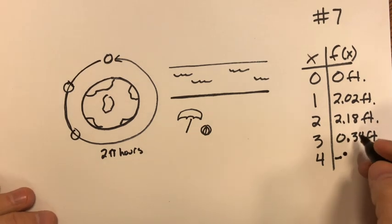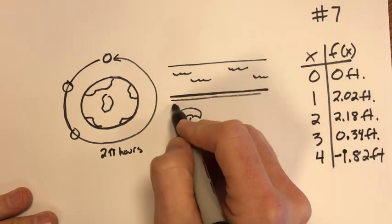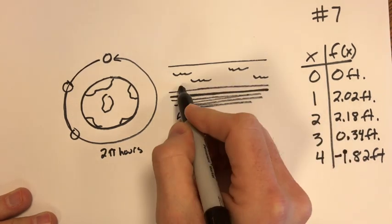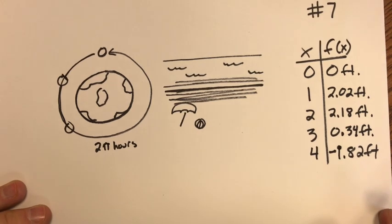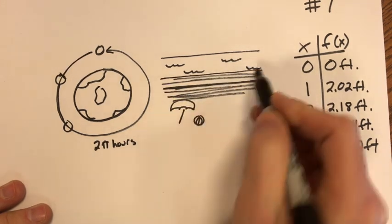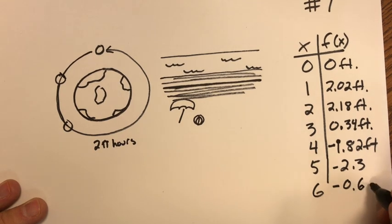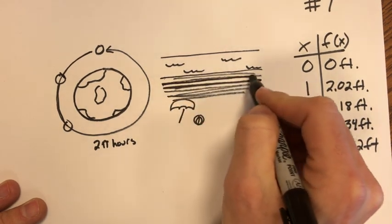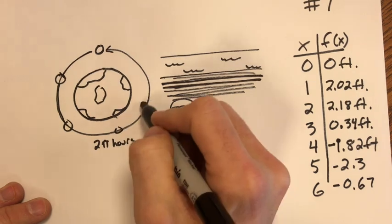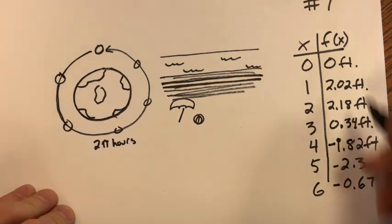After four hours, negative 1.82 feet. So now the tide was kind of creeping up on this poor umbrella here, but now it started to recede, and now the tide is actually going back, it's below what it was to begin with. After five hours it's at negative 2.3, so now it's receded even more back into the alien ocean. And at six it's at negative 0.67, so it's starting to come back to normal. So x is time in hours, as this moon circles around it takes exactly two pi hours to complete the cycle and here's some data. f(x) is the height of the tide.